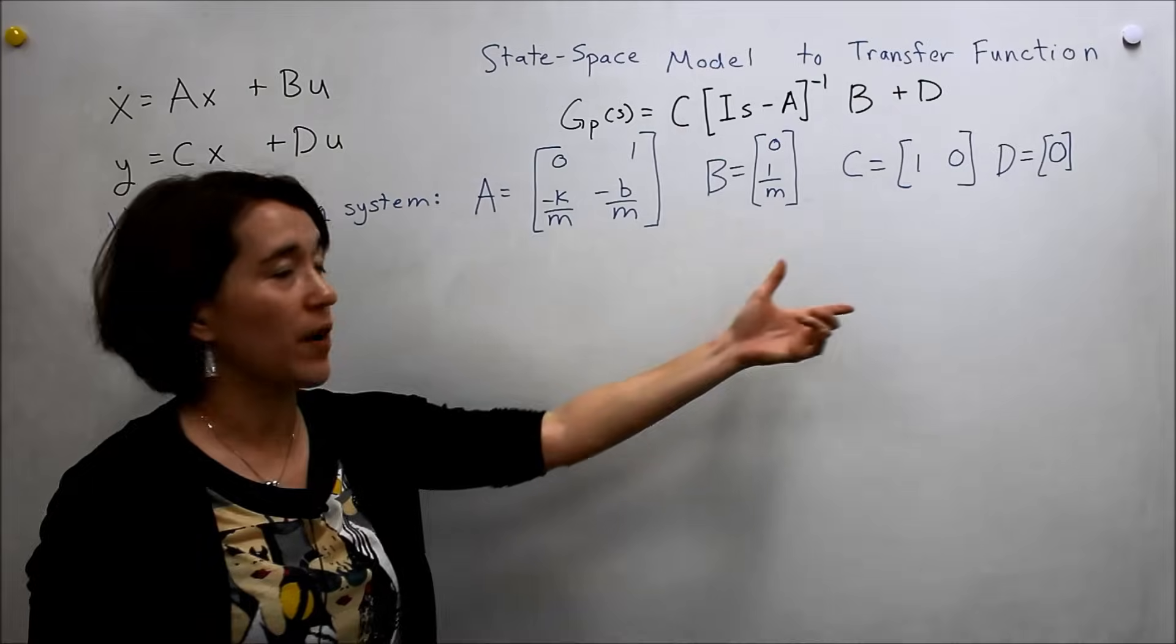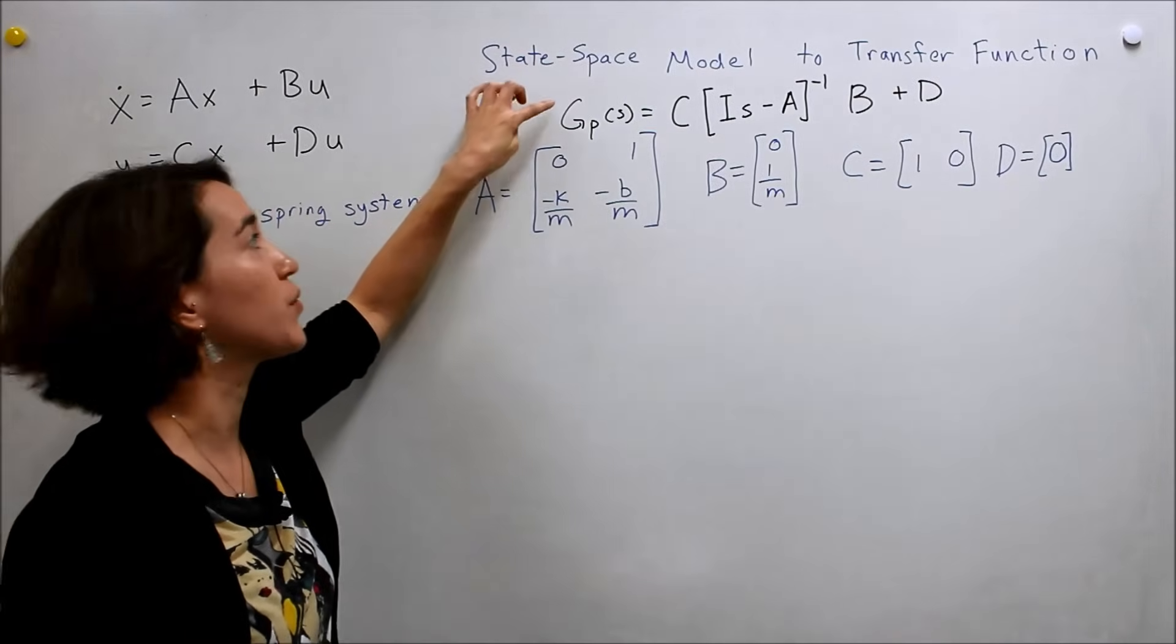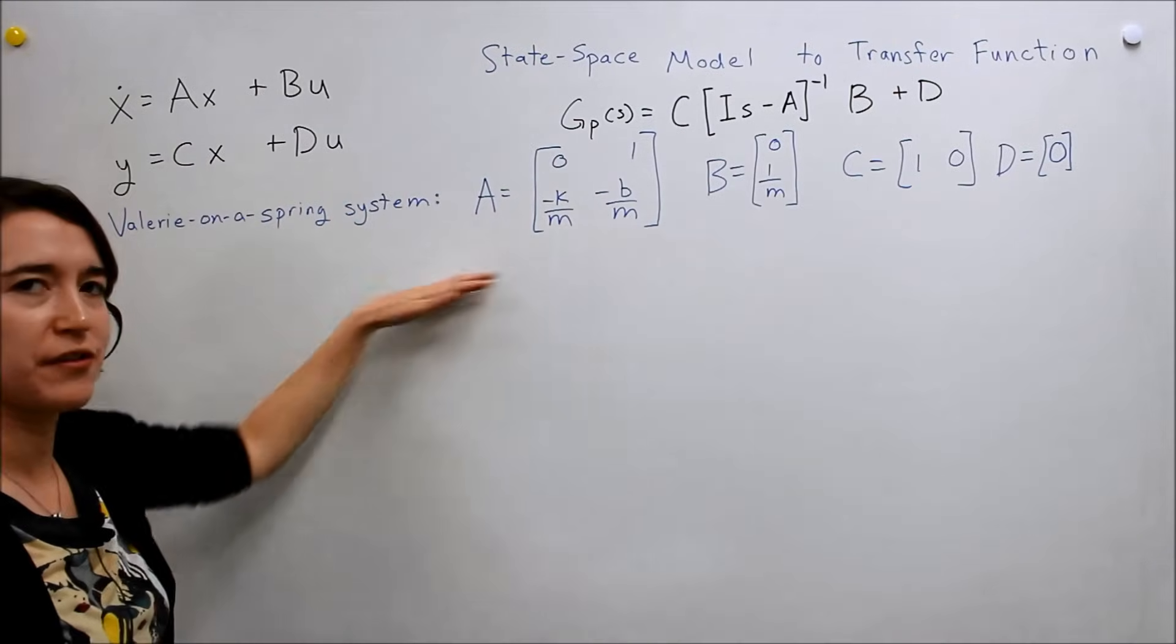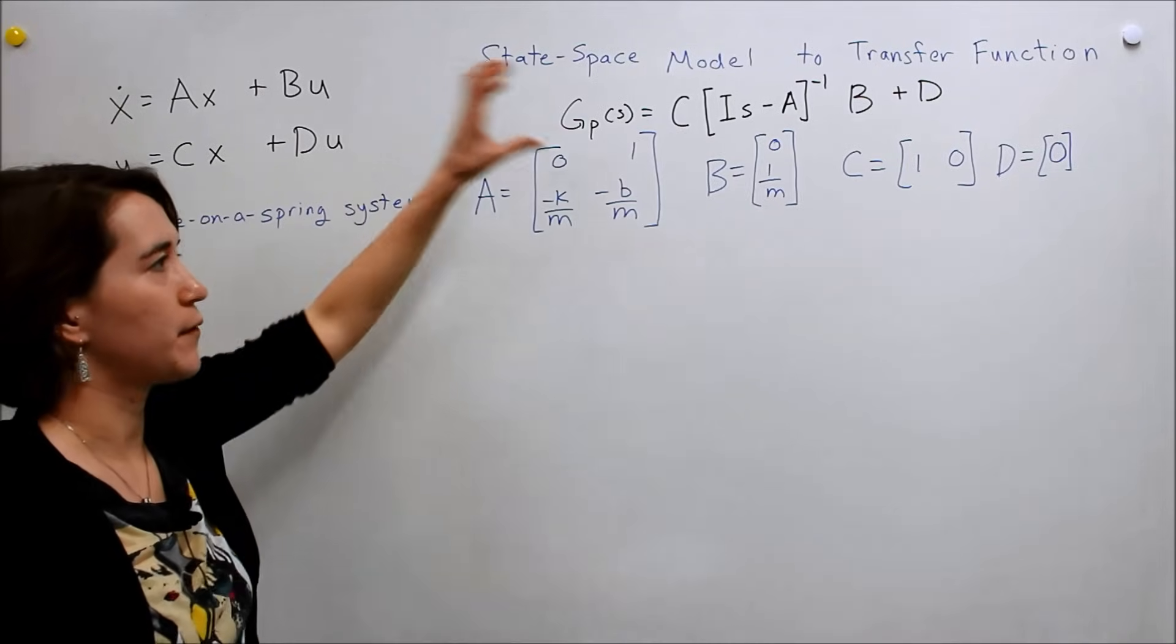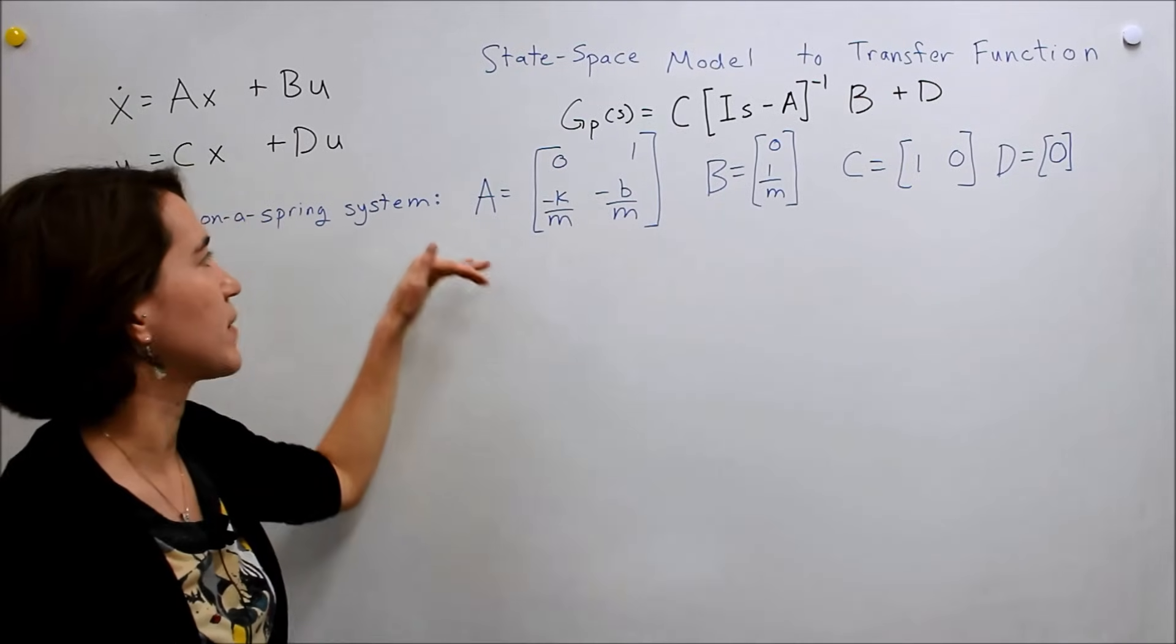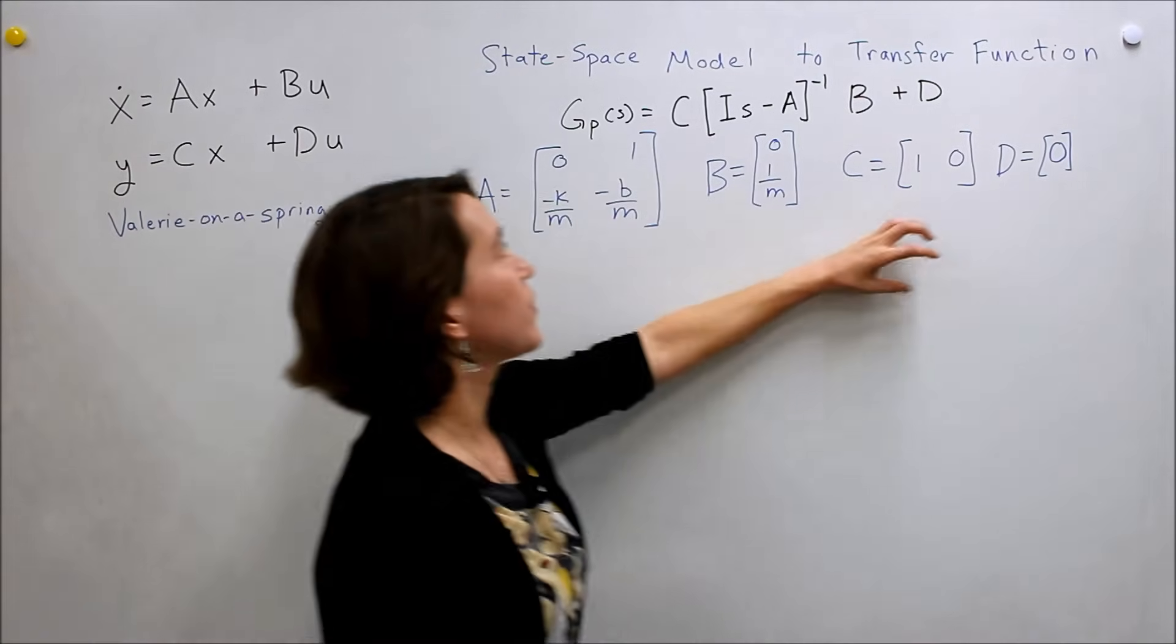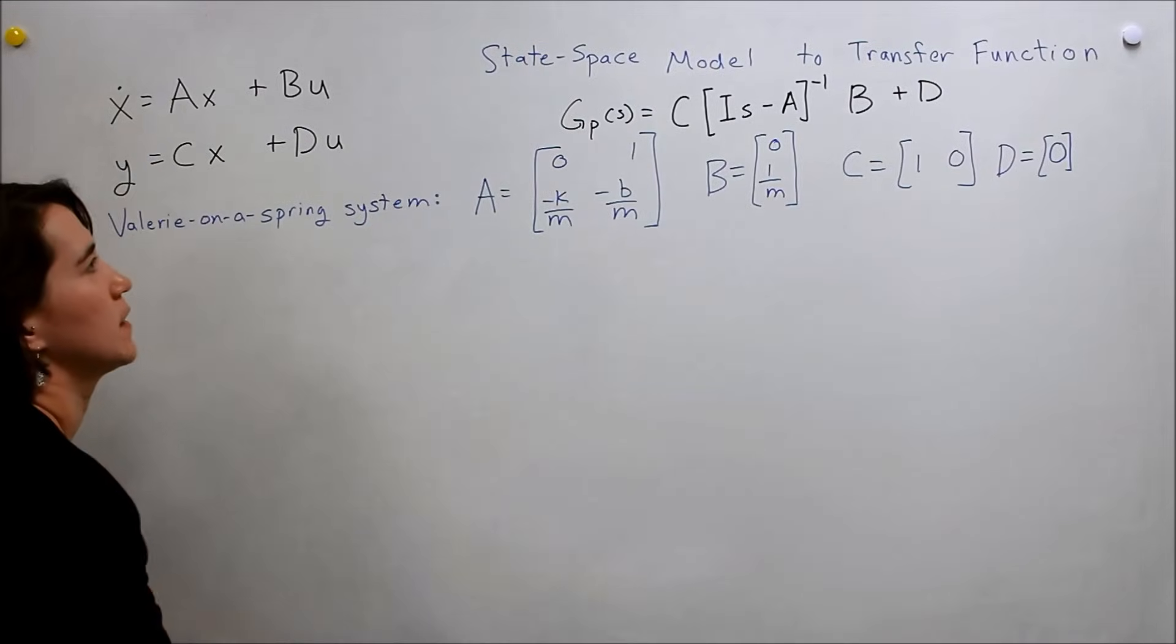Okay. So I've rewritten the equation we just derived to go from state space to the transfer function right here. And we're going to recall our favorite Valerie on a spring system. And we've already modeled it in the state space, so I'm just writing out the different components right here. And so we are going to evaluate this transfer function.